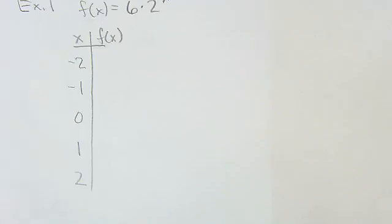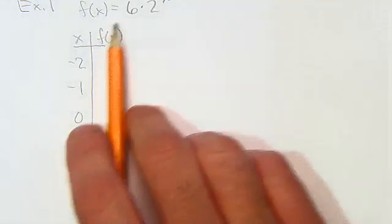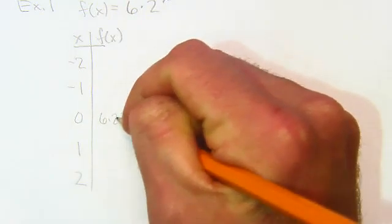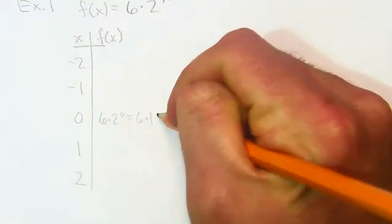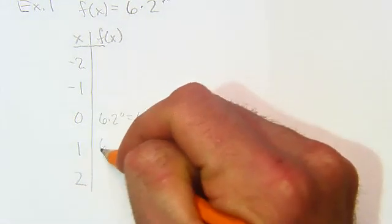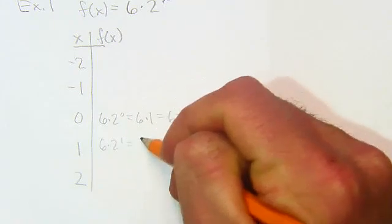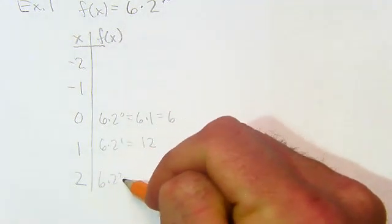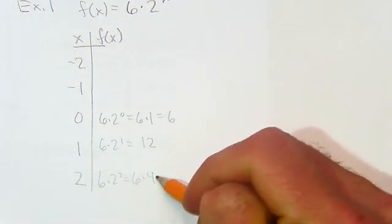If you start with 0, that's the easiest place to start. So 6 times 2 to the 0. Remember, anything to the 0 power is 1, so this is just 6 times 1. We plug in 1, 6 times 2 to the 1 is just 6 times 2, which is 12. And then 6 times 2 squared is 6 times 4, which is 24.